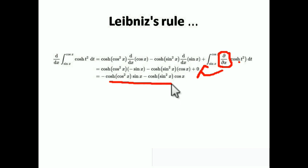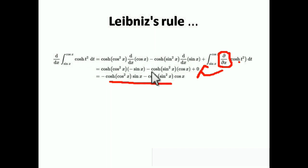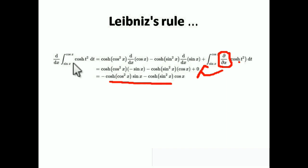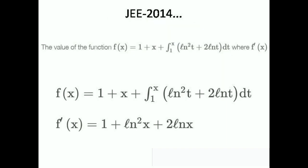It's very easy. Again, to recap: upper limit substituted in the function multiplied by differentiation of the upper limit, minus lower limit substituted in the function multiplied by differentiation of the lower limit. Note: if sometimes the lower limit or upper limit is a constant, then its differentiation is zero, so that part vanishes entirely.